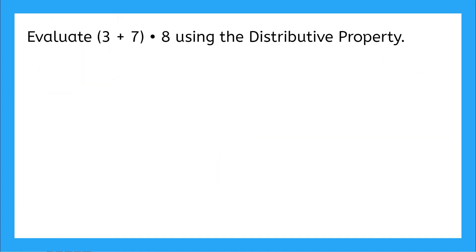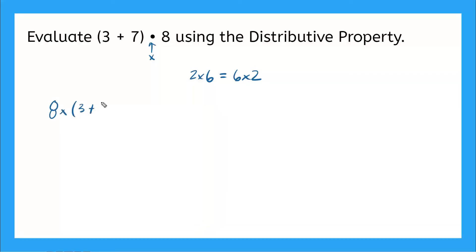Let's do one more example together. This one says evaluate 3 plus 7 multiplied by 8 — remember that bullet means multiplication — using the distributive property. So I'm going to rewrite my expression in a way that makes more sense. Remember, I can write multiplication in any order, like 2 times 6 is the same as 6 times 2. So I'm going to move my 8 to the front: I'll have 8 times 3 plus 7. I can just cozy my 8 right up to my parentheses, so I have 8 times 3 plus 7.